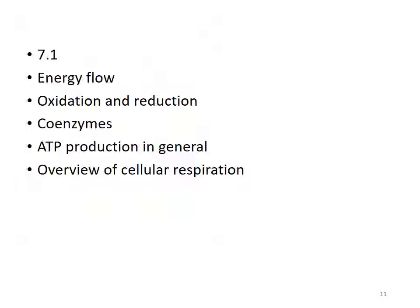That was the end of chapter 7.1. We talked about energy flow, oxidation and reduction reactions — oxidation is loss of electrons, reduction is gain of electrons — coenzymes and their role as electron carriers, and the two methods for ATP production: oxidative phosphorylation and substrate-level phosphorylation. We also covered the big picture on cellular respiration. Next video, we'll go into more detail on the specifics of cellular respiration.